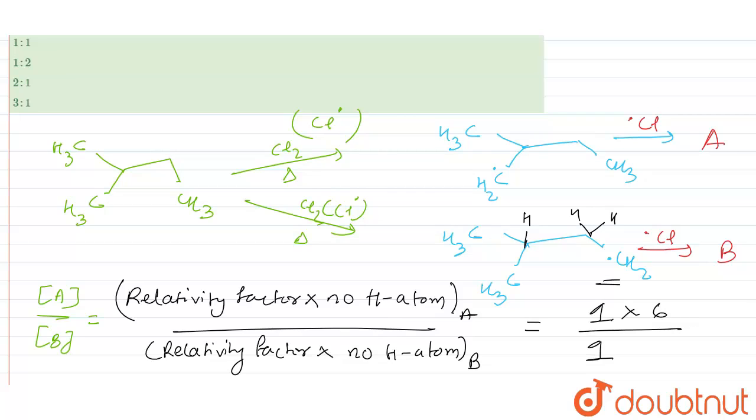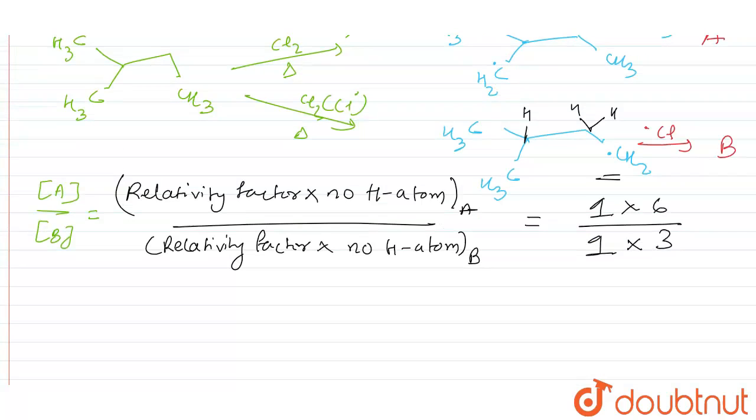So I'll write down one times number of hydrogen atoms, six, divided by one times same relativity factor. Here we have three hydrogen atoms, so three. So this comes out to be how much? This will be equal to, if I write down, A upon B is equal to two upon one.